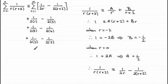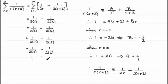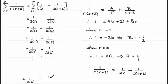The pattern continues: the next line would be +1/(2·4) − 1/(2·6), and so on. The very last term, when r = n, would be +1/(2n) − 1/(2(n+2)). So the final line is plus 1/(2n) minus 1/(2(n+2)).